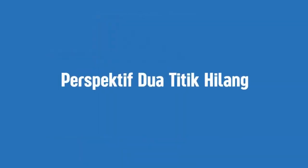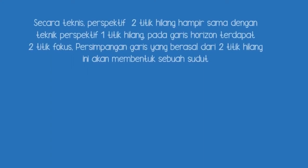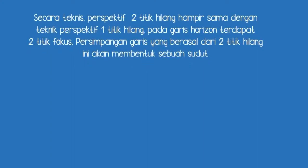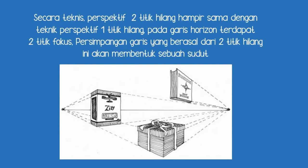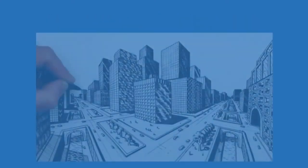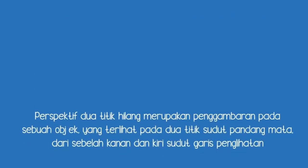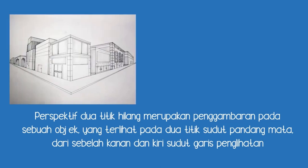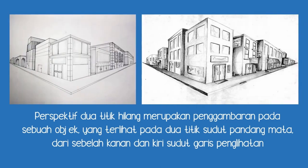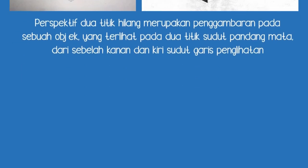Perspektif 2 titik hilang. Secara teknis, perspektif 2 titik hilang hampir sama dengan teknik perspektif 1 titik hilang. Pada garis horizon, terdapat 2 titik fokus. Persimpangan garis yang berasal dari 2 titik hilang ini akan membentuk sebuah sudut. Perspektif 2 titik hilang merupakan penggambaran pada sebuah objek yang terlihat pada 2 titik sudut pandang mata, dari sebelah kanan dan kiri sudut garis penglihatan.